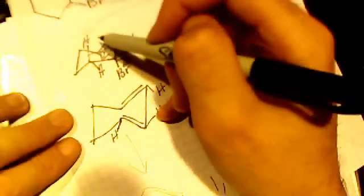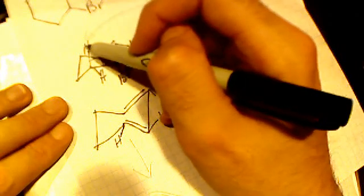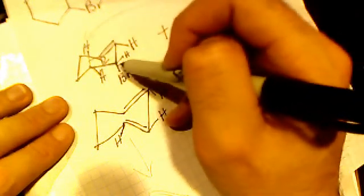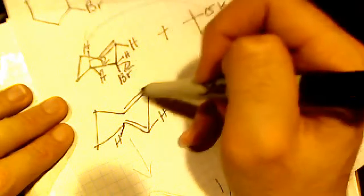You can see from this reaction, it's the equatorial hydrogen that's always the one that's gonna be eliminated, and the equatorial bromine is the one that's gonna be eliminated.